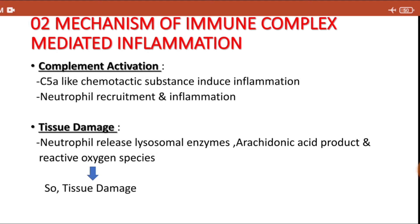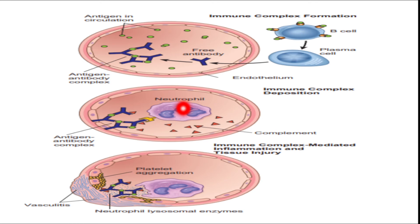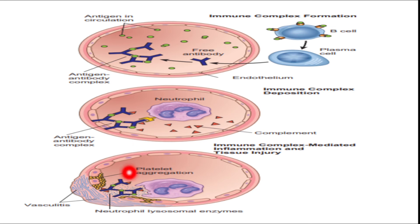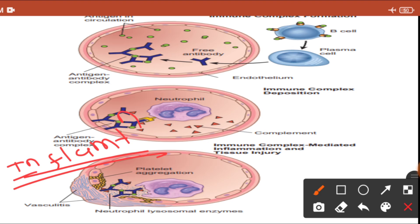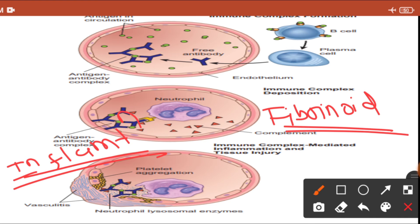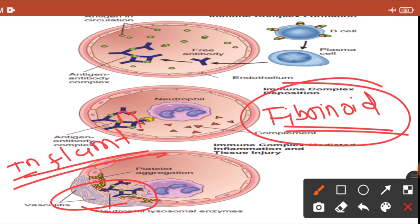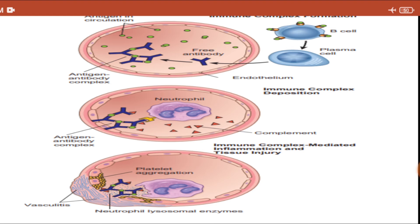This diagram demonstrates antigen-antibody complex formation in the blood vessel. The antigen is in the circulation, the B cell gets stimulated to produce antibody, which combines with antigen to form immune complex deposited in the blood vessel. When deposited in the blood vessel, the complement system gets activated, causing inflammation and tissue damage. The tissue damage in the blood vessel is particularly in the form of fibrinoid necrosis, causing acute necrotizing vasculitis.